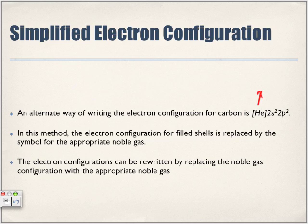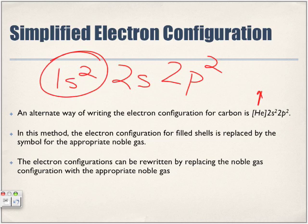So which energy level is full? The 1s. Because now we're on the second energy level, right? Which is 2s and then the 2p². So carbon, if we look at the periodic table, is on the second energy level, which means that all the ones in front of it represent the noble gas.